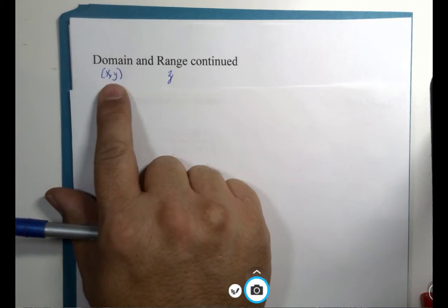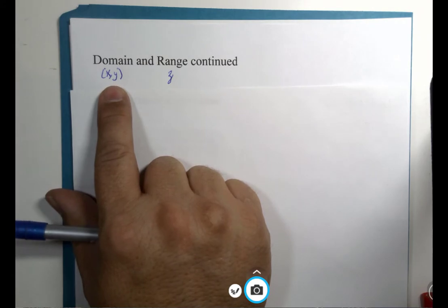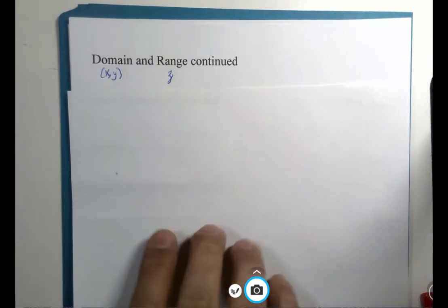Sketching the domain with three variables would require three-dimensional pictures. Sketching the domain with four variables, I don't know if I could do that, actually. We could talk about the domain, but sketching it may not be a feasible thing.